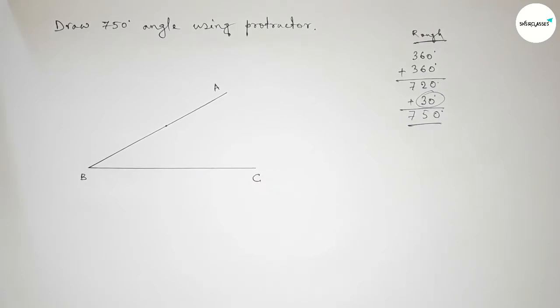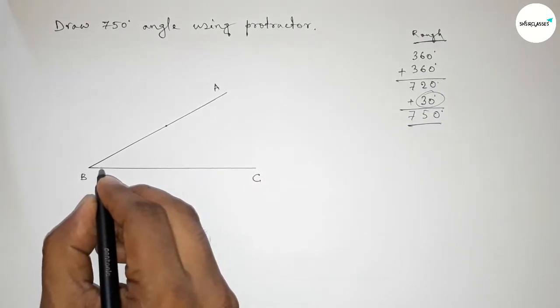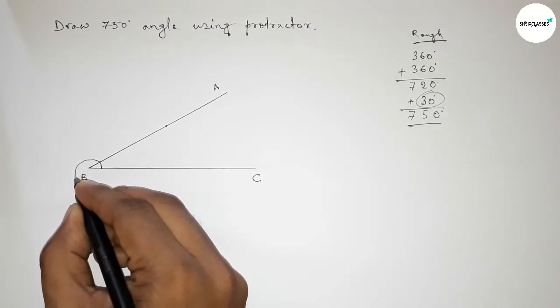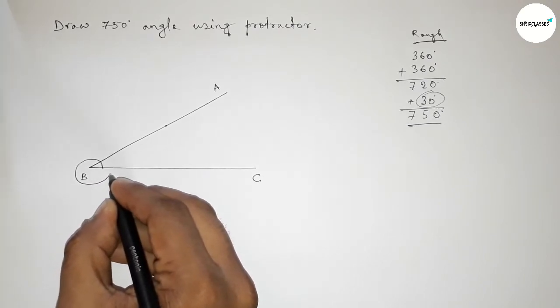Now drawing a curve, starting from here and taking a round from this to this. So this is total 360-degree angle.